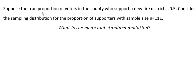Suppose the true proportion of voters in the county who support a new fire district is 0.5. Consider the sampling distribution for the proportion of supporters with sample size n equal to 111. They want to find the mean and the standard deviation.